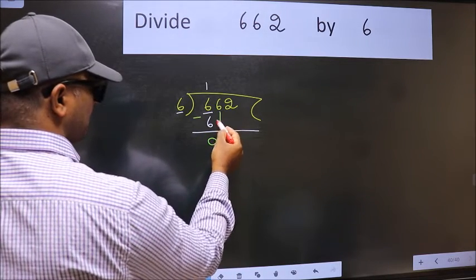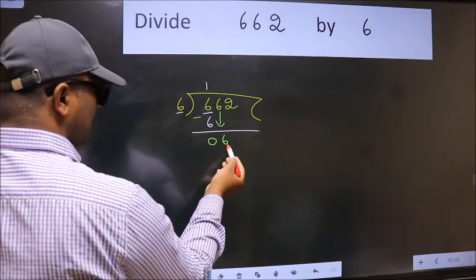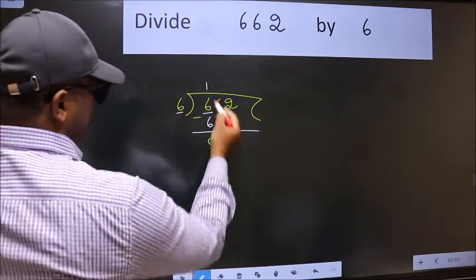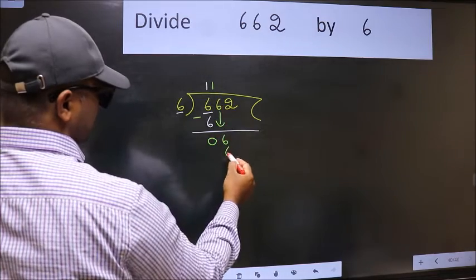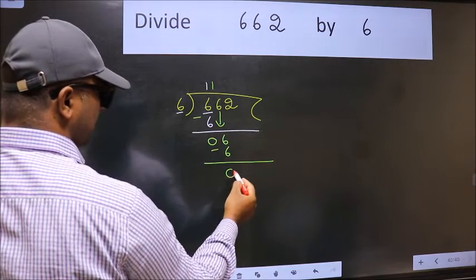After this, bring down the beside number 6 down. When do we get 6 in 6 table? 6 once 6. Now we subtract. We get 0.